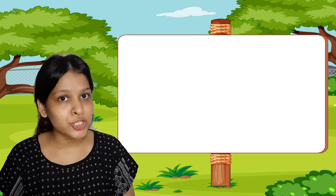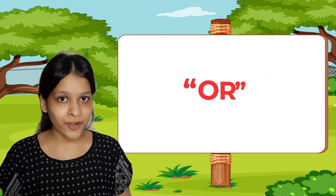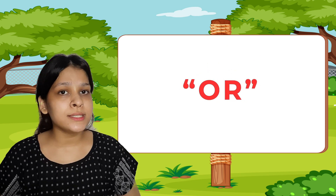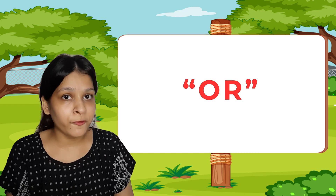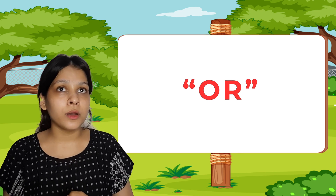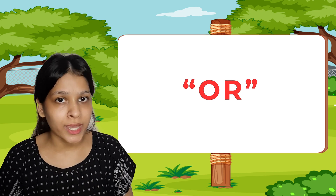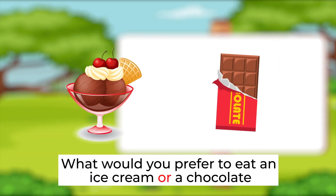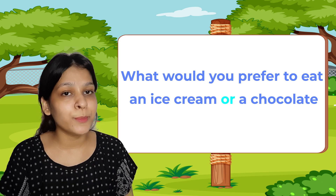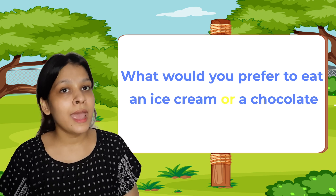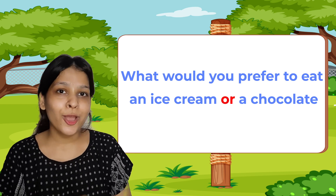Now the third conjunction is 'or.' We use this conjunction to portray a difference when we are asking for a choice. For example, 'What would you prefer to eat, an ice cream or a chocolate?' Here, we are making a choice between an ice cream and chocolate.